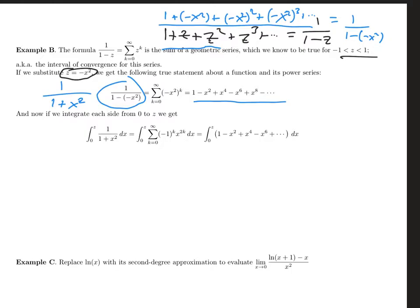So on the left-hand side, if I integrate 1 over 1 plus x squared, that's the arc tangent. So I'll have arc tangent of x evaluated from 0 to z, which will just be arc tangent of z, since arc tangent of 0 is 0. So on the left-hand side, I have arc tangent of z.